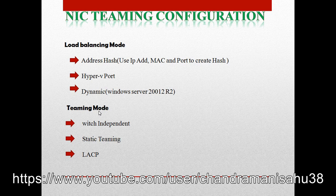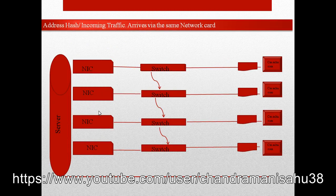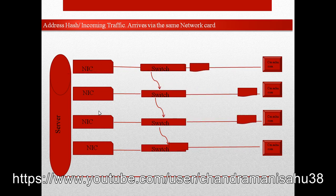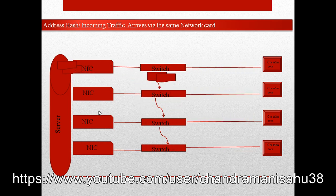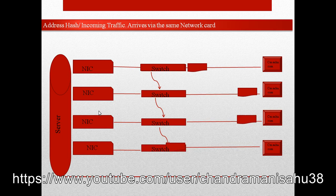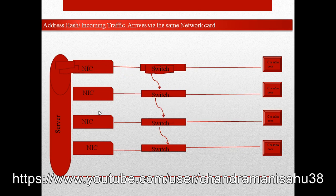Let's move to the next slide. This is address hash — incoming traffic arrives by the same network. I made this PPT with animation so you can better understand. The key point of address hash is that it captures the IP address and MAC address. The switch will also capture the IP address, MAC address, and port details. That is what address hash does.